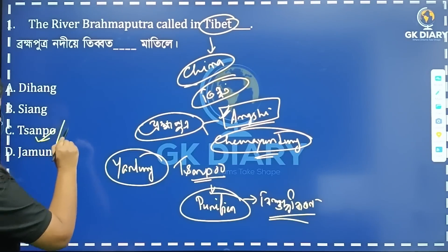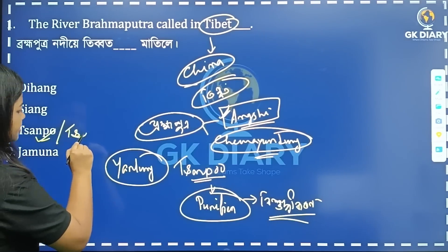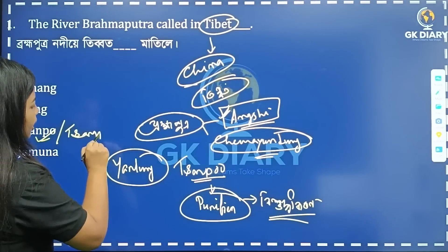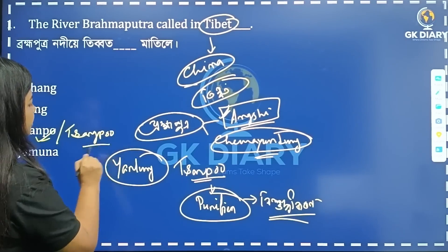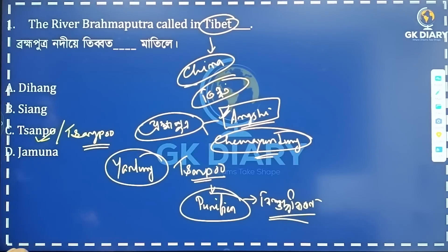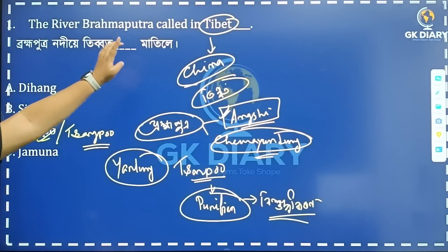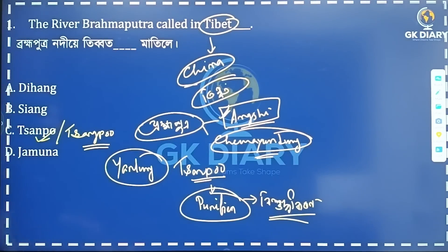The correct answer is Tsangpo — spelled S-A-N-K-P-O, Sankpo. So the river Brahmaputra is called Tsangpo or Sankpo in Tibet.